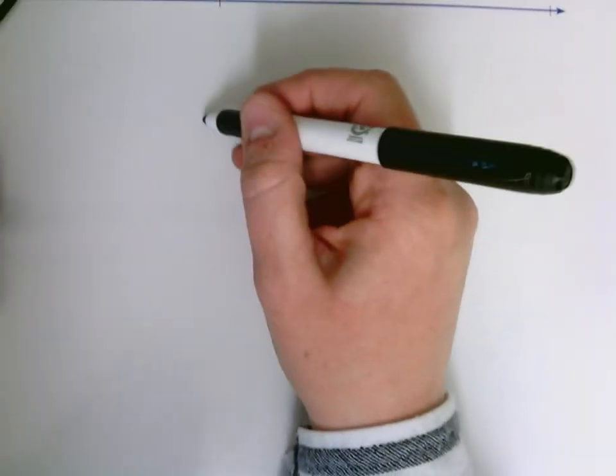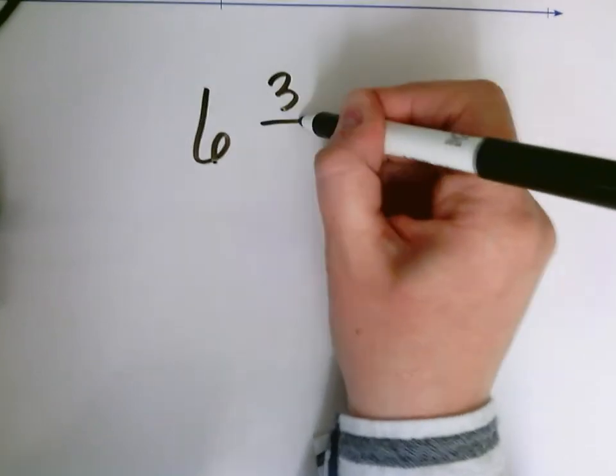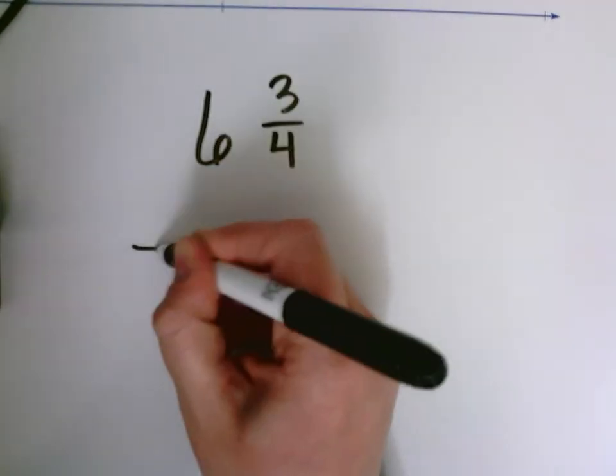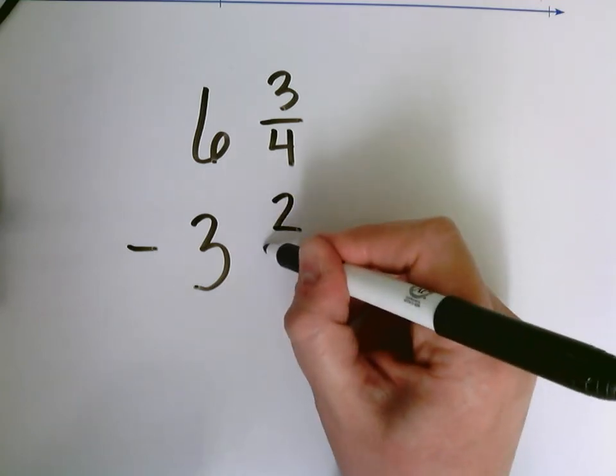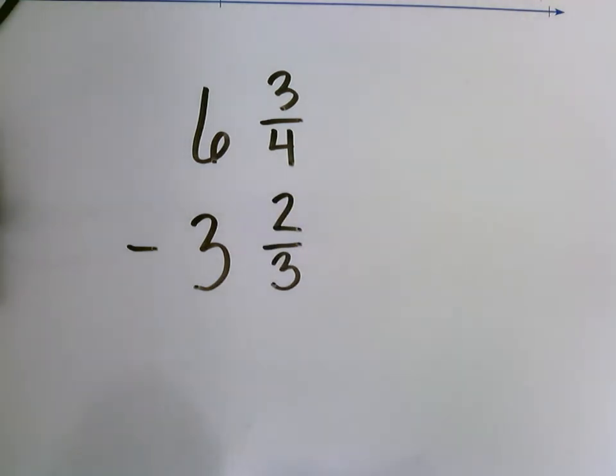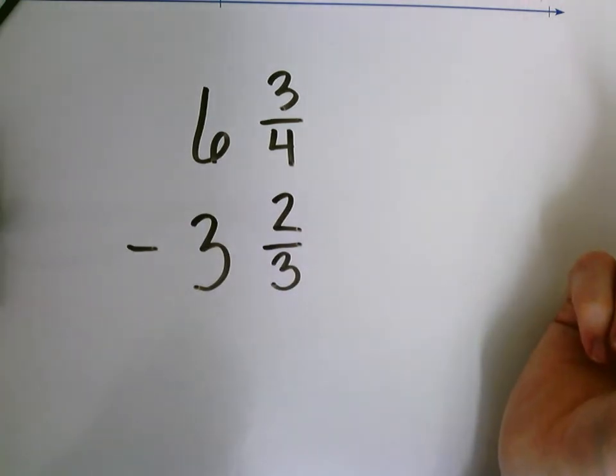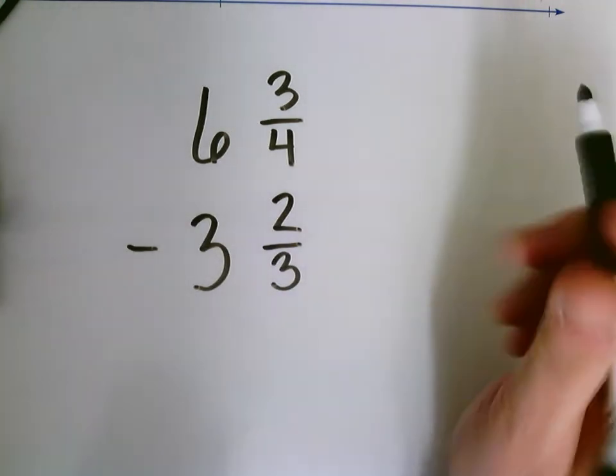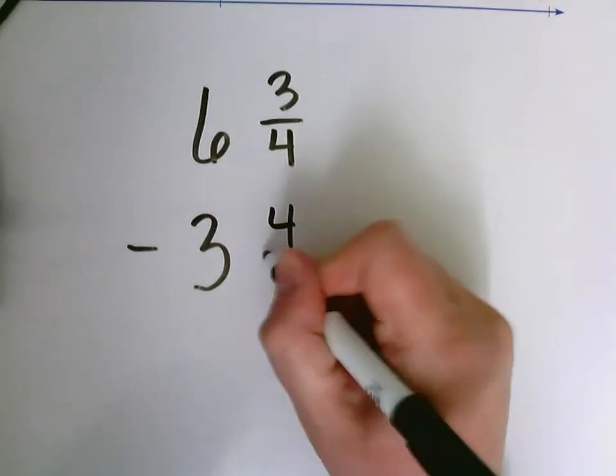Let's do 6 and 3 fourths minus 3 and 2 thirds. 6 and 3 fourths minus 3 and 2 thirds. Actually, I think that's going to work out just fine. Let's do 3 and 4 fifths.